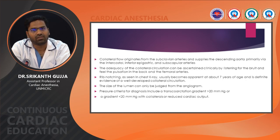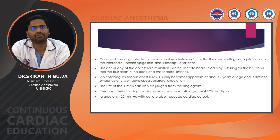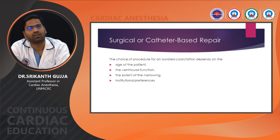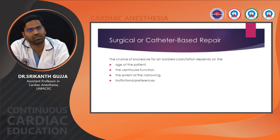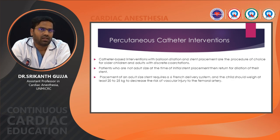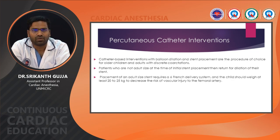Surgical or catheter-based repair: the choice of procedure depends on age of the patient, ventricular function, extent of narrowing, and institutional preference. Catheter-based interventions with balloon dilatation and stent placement are the procedure of choice for older children and adults with discrete coarctation.